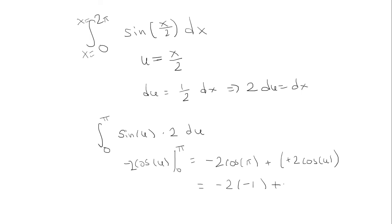So it's plus 2 times cosine 0. Well, cosine of 0 is 1, so that's just 2. Negative 2 times negative 1 is 2. 2 plus 2 is 4. So 4 is our answer.